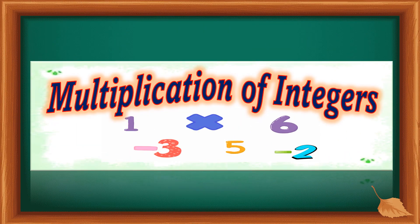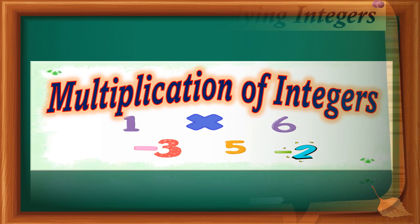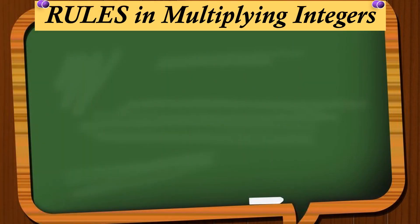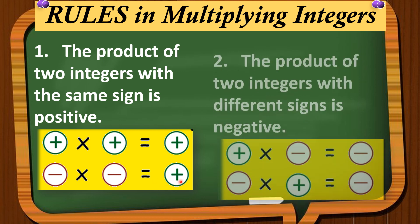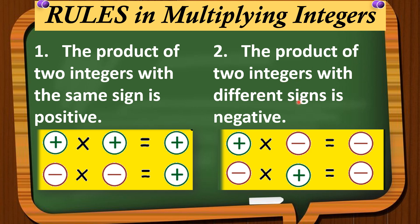Now we have multiplication of integers. The rules in multiplying integers: first, the product of two integers with the same sign is positive. So positive times positive is positive, and negative times negative is also positive. The next rule is the product of two integers with different signs, or unlike signs, is negative. Positive times negative is equal to negative, and negative times positive is equal to negative.